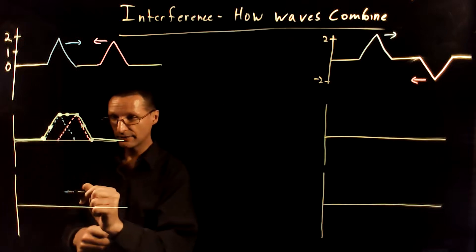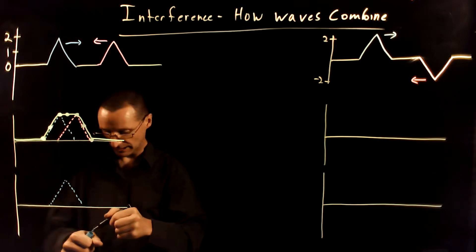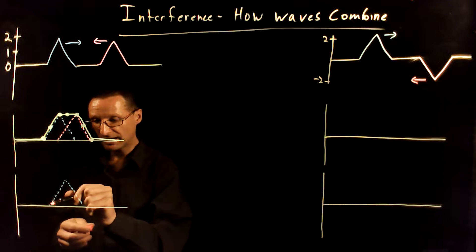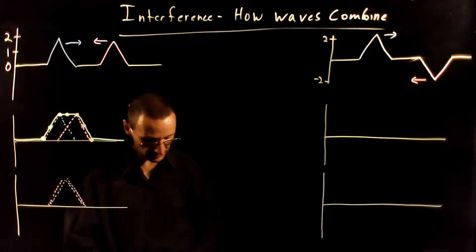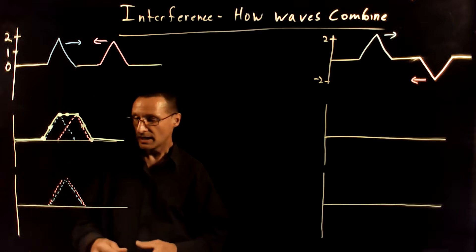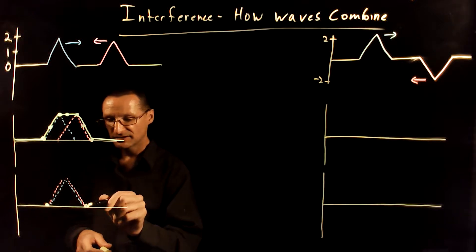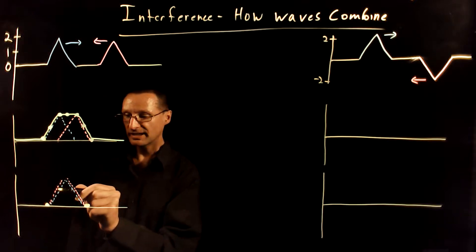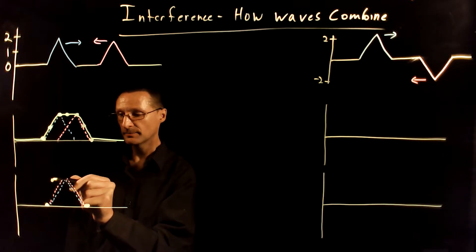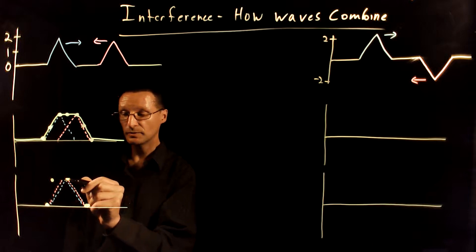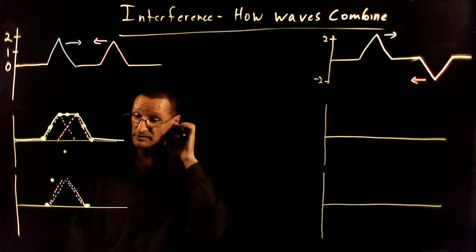Let's advance these another frame to see them totally overlapping. The blue has a height of positive two, the pink has a height of positive two, and in this frame they are totally overlapping. Here they're not even overlapping, so this is zero. Here the pink has a height of one, blue is one — one plus one is two. Here blue is two, pink is two — two plus two is four. So the height is doubled from what it was before.